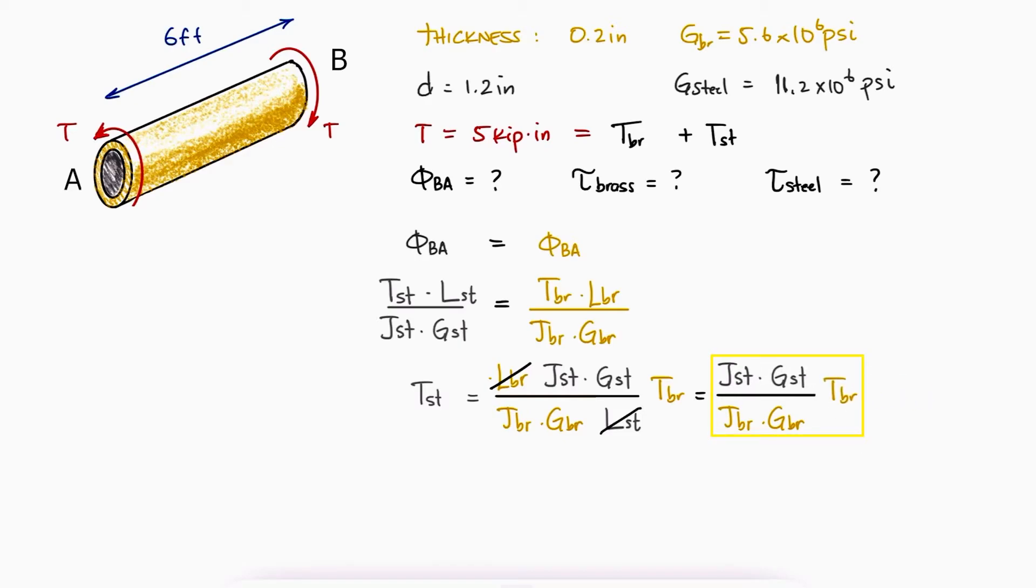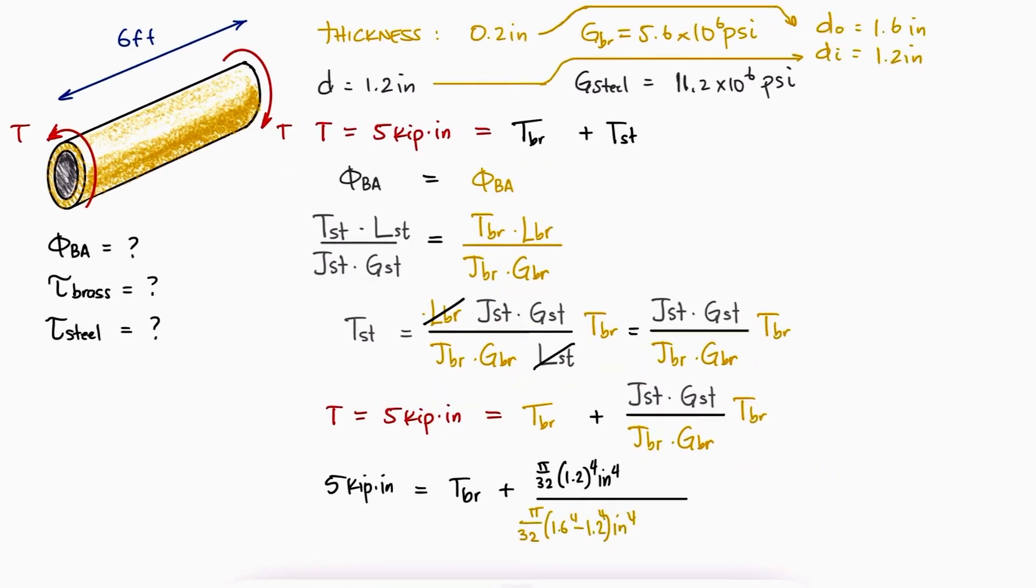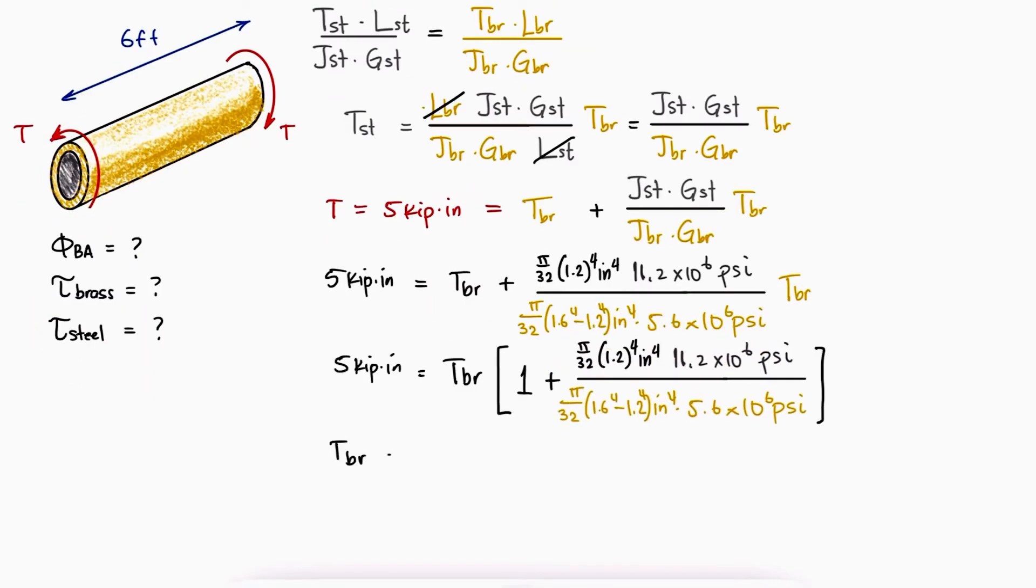Substituting the torque in the steel in the sum of torque equation, calculating the polar second moments of area, and substituting the values for the shear moduli, we can solve for the torque in the brass.